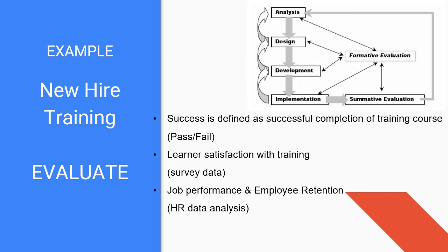Phase five is evaluate for our new hire training. What is success? Success is defined as successful completion of the training course with learner satisfaction with training, job performance, and employee retention. All of this comes from our various forms of data.